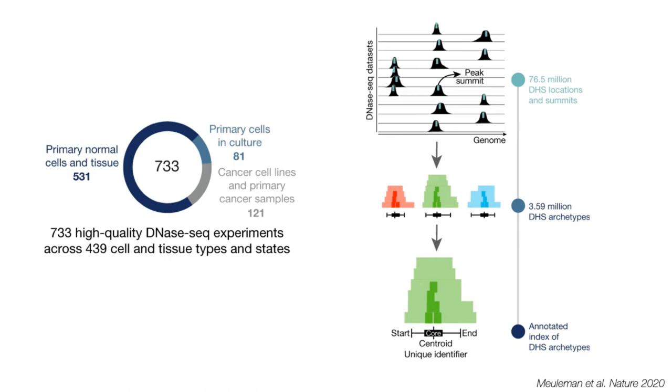If you go and call all of those datasets individually, you come up with about 70 odd million different hypersensitive sites that are mapped somewhere, but if you integrate it all together into a consensus index,